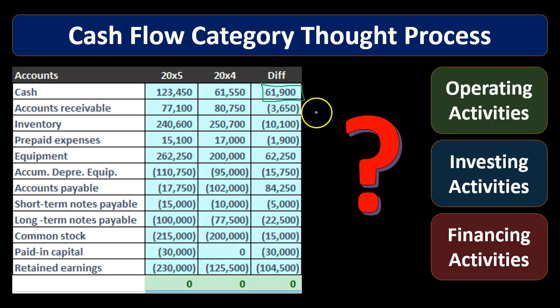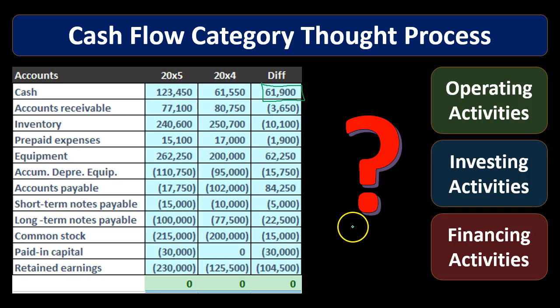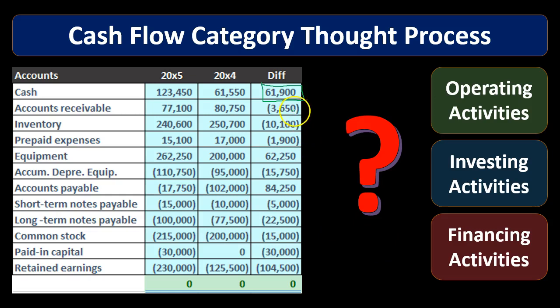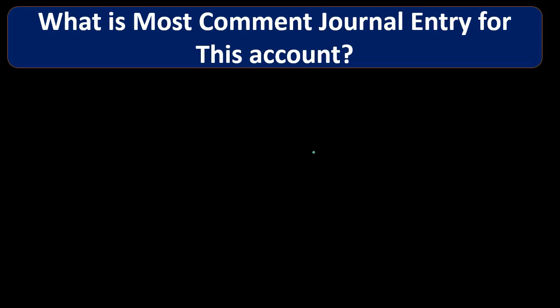So what we need to do is take a look at these changes in receivables, changes in inventory, changes in prepaid expenses, and try to determine where does that change belong. Is the change in inventory an operating, investing, or financing activity? Is the change in long-term notes payable an operating, investing, or financing activity? Our goal is to go through a thought process to think through more clearly which category these should belong to. So the first question is: what's the most common journal entry in this account? Whatever account they're giving us, we're going to think about the most common journal entry related to it — there's typically going to be one or two common ones.